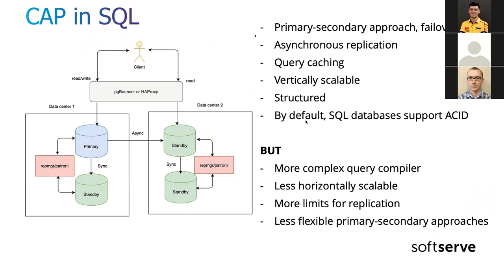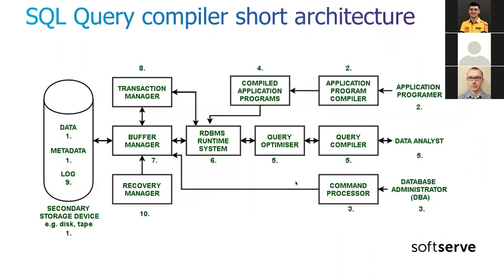SQL databases by default support ACID transaction levels, like PostgreSQL's transaction isolation levels. The primary/secondary approach is not as flexible as, for example, in MongoDB. You will need a SQL database when you need strict, precise structure. They also have a transaction manager and query optimizer to support all ACID properties and to execute queries faster.